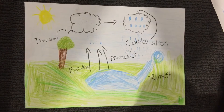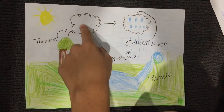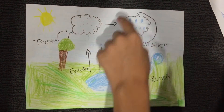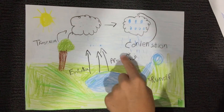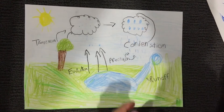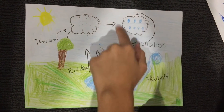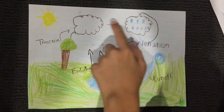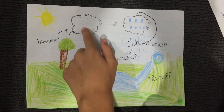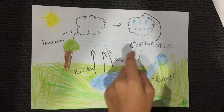As you can see right here, the water droplets are turning into bigger water droplets because of condensation. Condensation is basically where all of these tiny water droplets turn into big ones and they cool off.